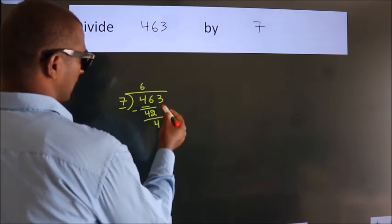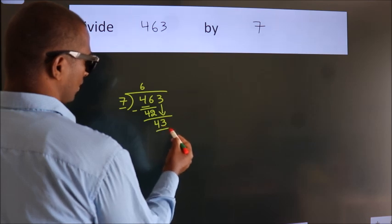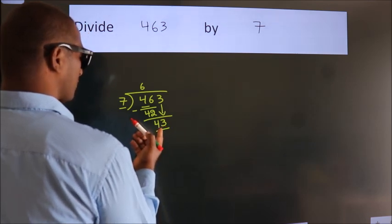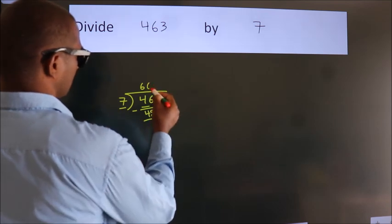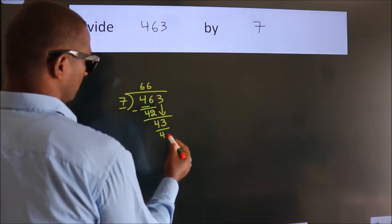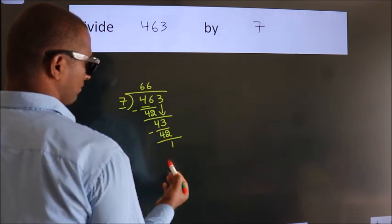After this, bring down the beside number. So 3 down. So 43. A number close to 43 in the 7 table is 7×6=42. Now we should subtract. We get 1.